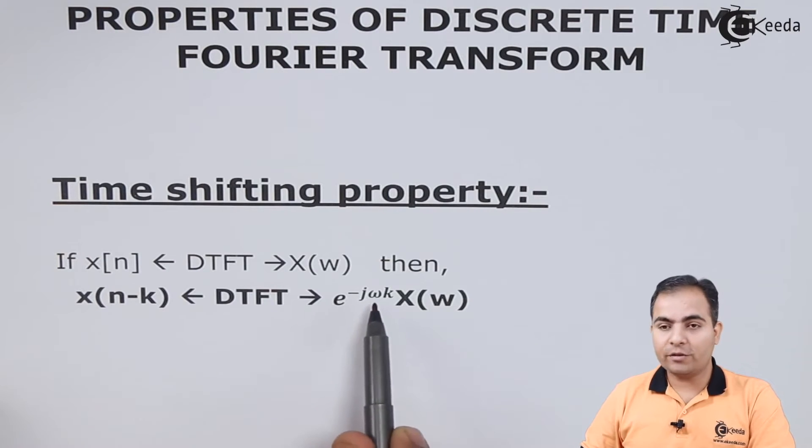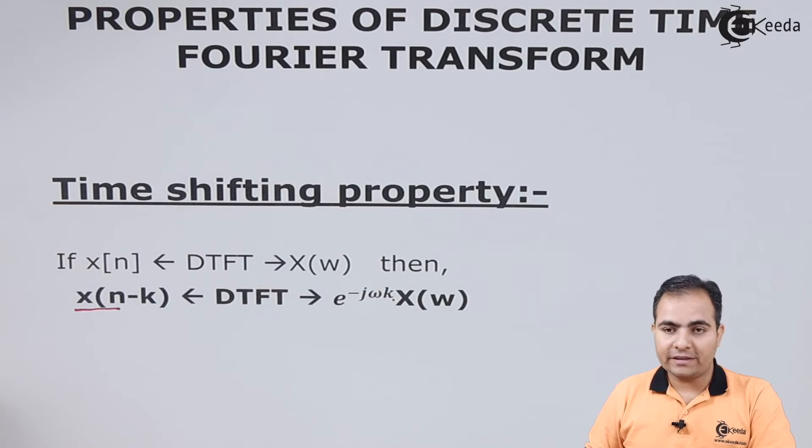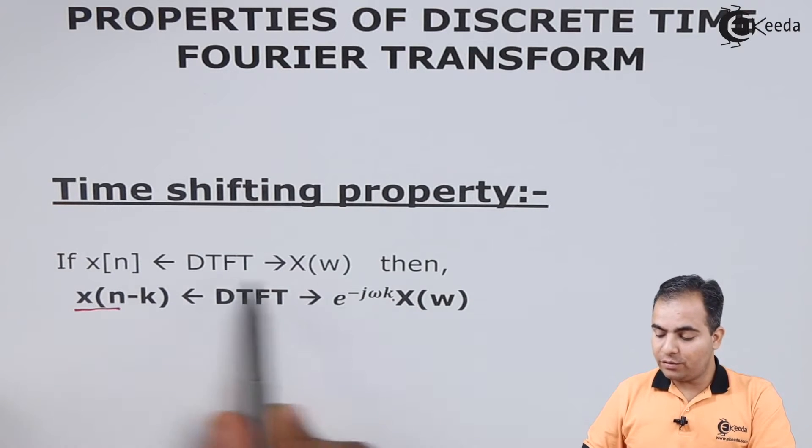is e to the power minus jωk times the discrete time Fourier transform of x[n]. Now we will prove this whole statement.